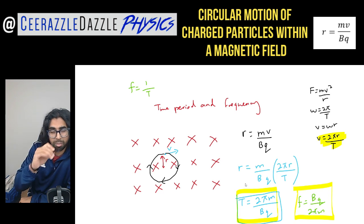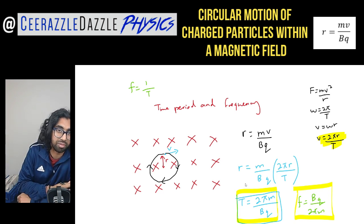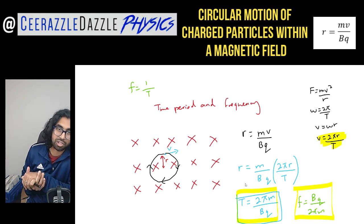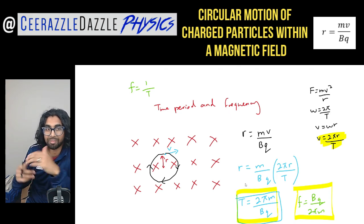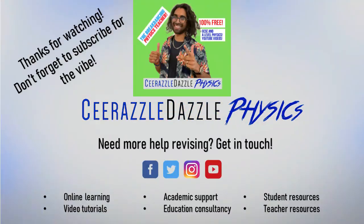That's it for another session. The main things to take away: charged particles moving in magnetic fields exhibit circular motion; we equate the magnetic force with the centripetal force to get expressions for the radius, the time period, and the frequency; and we can determine the path of particles by checking clockwise or anti-clockwise motion. Make sure you hit the like and subscribe button — good luck in your studies. Ciao ciao and goodbye.